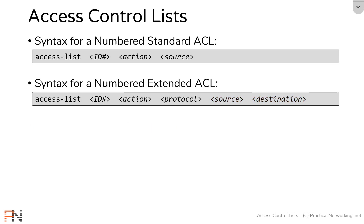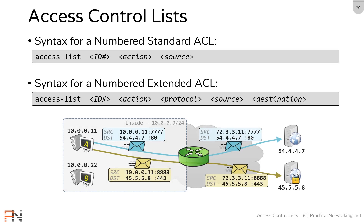Now that we've talked through every single field in the syntax for numbered access lists, it's time to actually configure some together so you can see them in action. In the next video, we'll be configuring access list entries to match some of the packets in a topology. The key takeaway is understanding each of the fields in the syntax for numbered access lists.